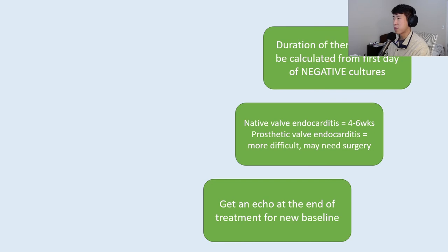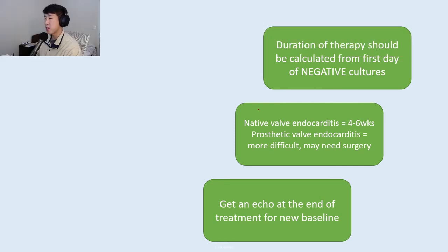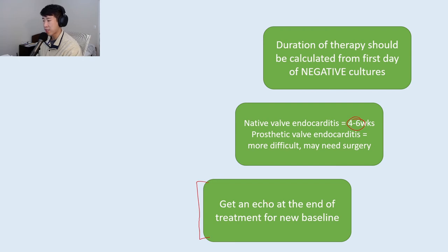The duration of therapy should be calculated from the first day of negative cultures. For native valve endocarditis, the duration is typically four to six weeks, so most patients will need a PICC line for IV antibiotics at home. Prosthetic valve endocarditis is more difficult and may require surgery. You should also get another echo at the end of treatment to establish a new baseline and check for residual regurgitation, stenosis, or changes in ejection fraction.